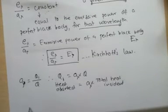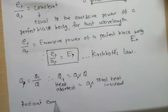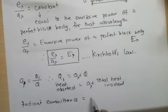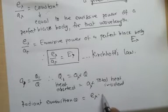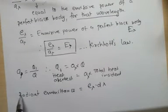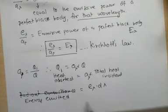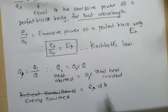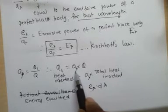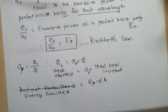The second thing to note is total heat emitted, or radiant emittance, equals E_lambda times D_lambda for a given wavelength range. So energy emitted equals E_lambda times D_lambda, where D_lambda is the wavelength range and E_lambda is the emissive power, while A_lambda is the absorptive power and Q is the total heat incident upon the object. With this background, let us look at Kirchhoff's Law.